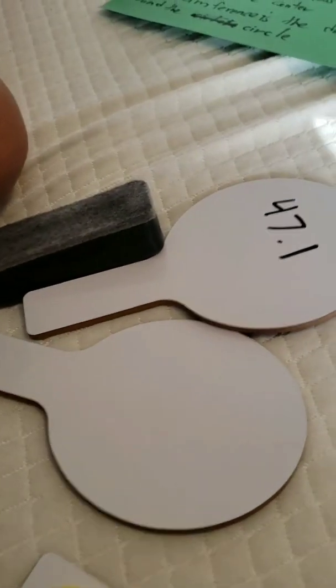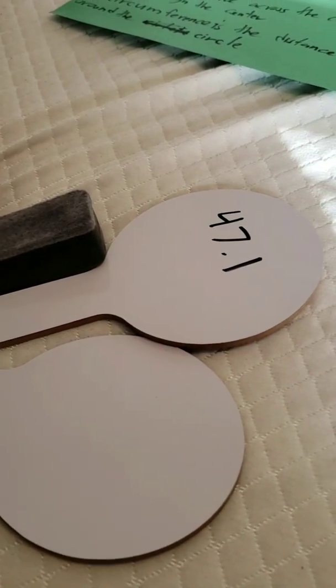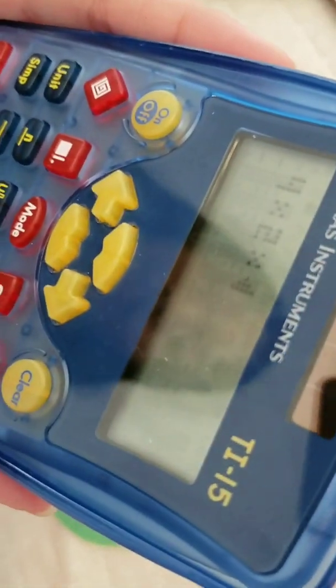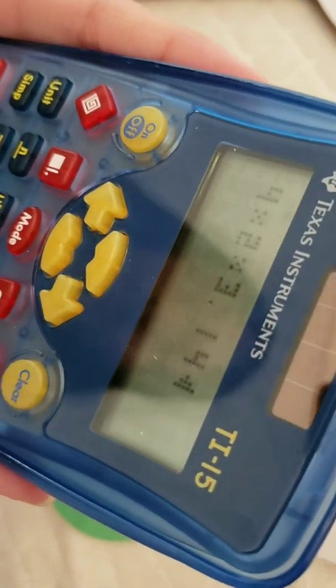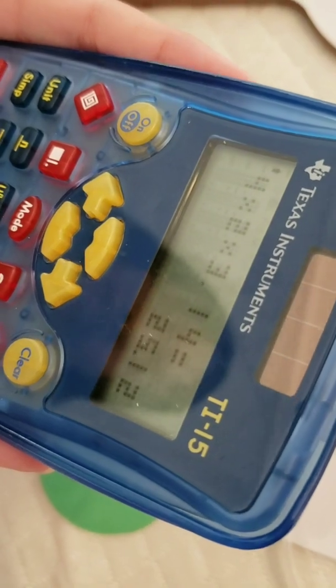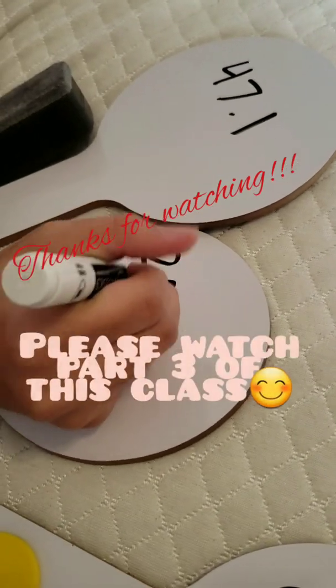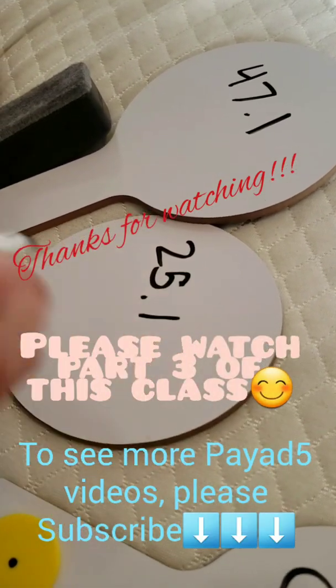Second problem. If the radius is 4 centimeters, find its circumference. 4 times 2 times 3.14. 25.1.